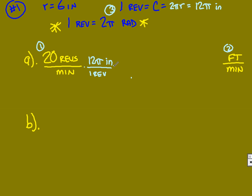Now, right now my unit is inches per minute, but I don't want that, I want feet per minute. So to fix that up, to change inches into feet, it's just 12 inches for every 1 foot. So then you do your multiplication straight across and you should get as an answer 20π feet per minute.